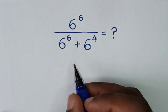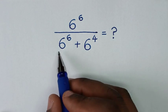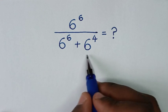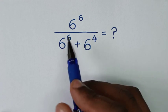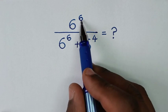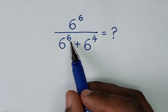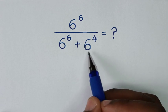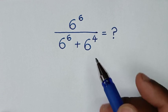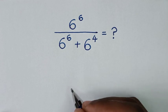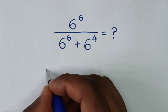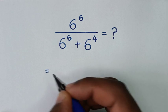Hello, you are welcome to solve this math problem, which is 6 power 6 over 6 power 6 plus 6 power 4. So it will be equal to: